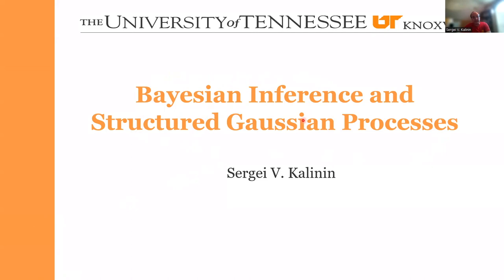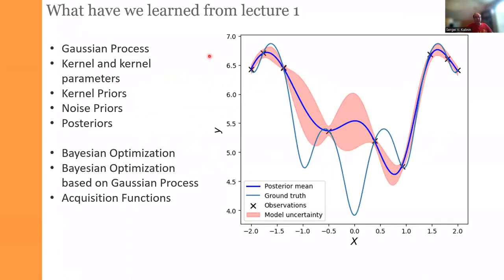As a reminder, in the first lecture we went through the basics of Gaussian processes and Bayesian optimization based on Gaussian processes. Just as a small recap: